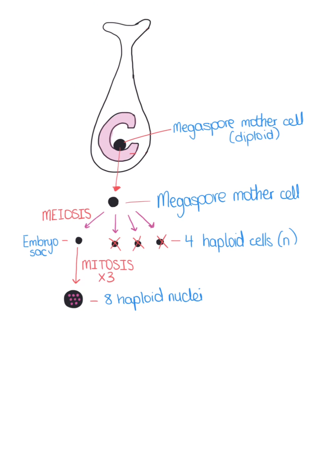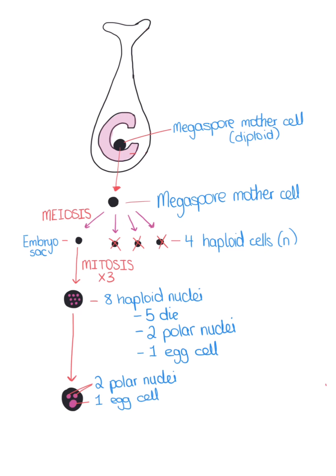Of these eight haploid nuclei, five of them die off. Two become the polar nuclei and one becomes the egg cell. It is the two polar nuclei and the egg cell that are the female gametes.